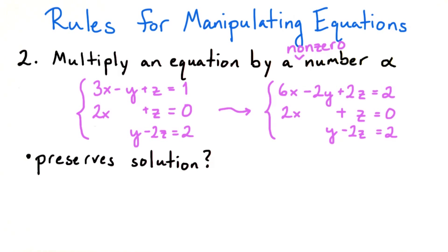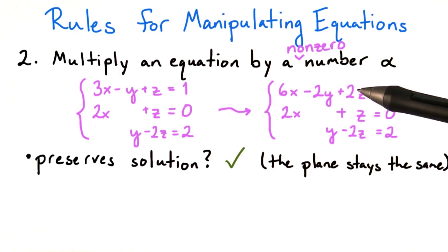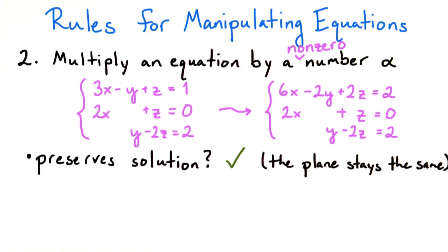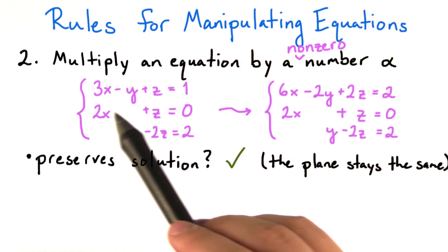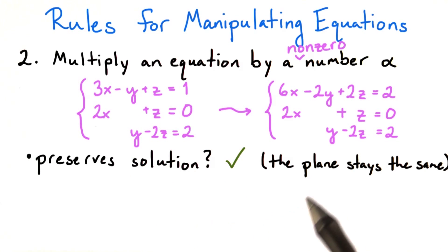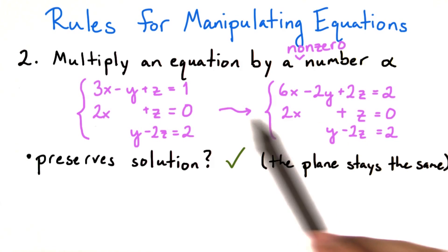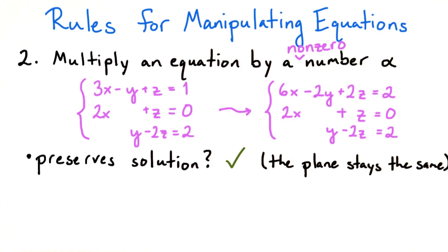Now does this operation preserve the solution? Yes. Multiplying through by a non-zero scalar just multiplies the normal vector, whose coordinates are these coefficients, by a scalar. So it will be pointing in the same direction. Moreover, you can algebraically verify that any point you select on the original plane satisfies the new equation, and vice versa. So the two planes consist of the same sets of points, i.e., they're the same.